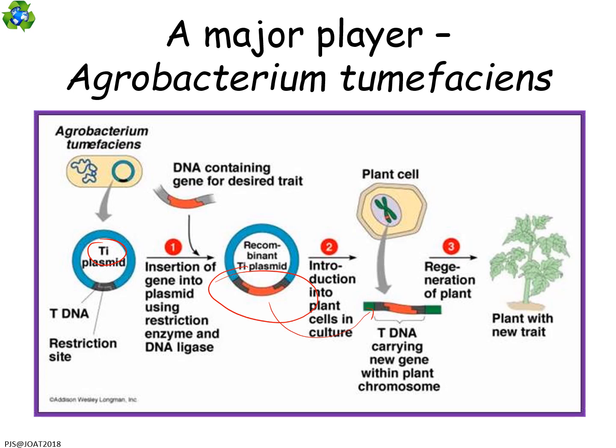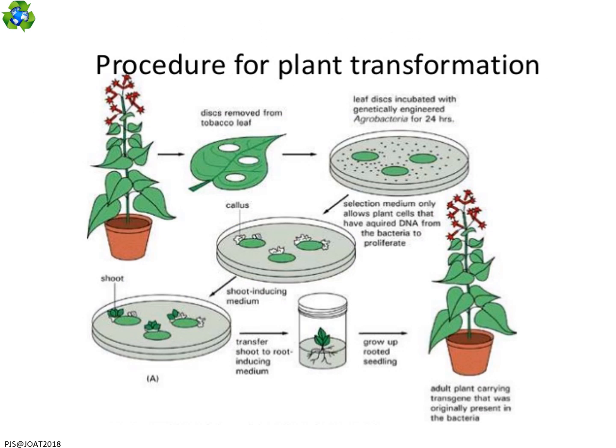Crucially, the Ti plasmid incorporates the section of DNA into the chromosome of the plant, so it stays in there rather than just sitting out in the cytoplasm — meaning it will be passed on. Plants are the most impressive organisms for this because they have a massive ability to regenerate, far beyond that of animals. You can use sections of plant, or even just a pile of cells, incubate them with your engineered Agrobacterium tumefaciens, and then give them the particular chemicals needed to grow roots and shoots, placing them into another medium to help them grow into a full-grown plant.